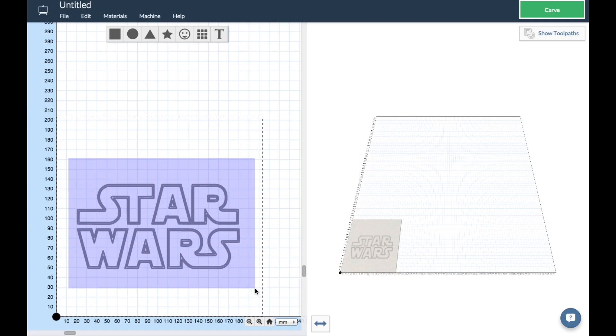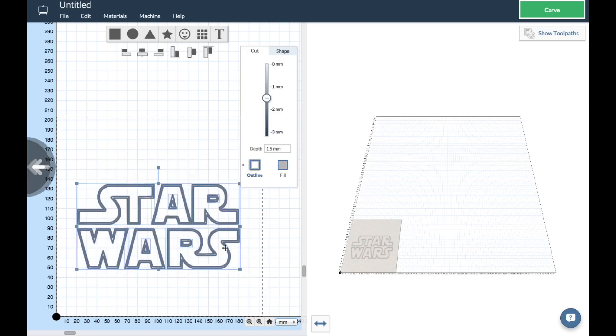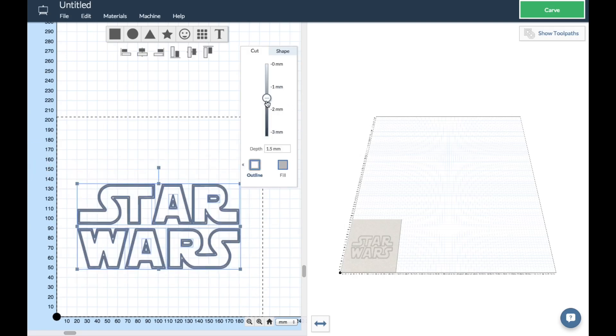I found a Star Wars graphic that was in SVG format, so I imported that into Easel and got it ready to print. I selected the whole logo and then I set it to a 1.5 millimeter depth and to cut right on the lines.